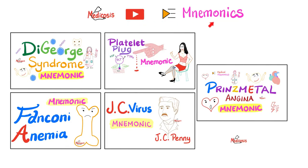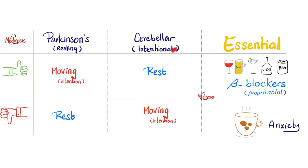Please watch the other videos in my mnemonics playlist — I have genetics, pharmacology, pathology, you name it. There are three famous types of tremors that you need to know. Of course the actual number is way more than this, but you need to remember just three for your exam.